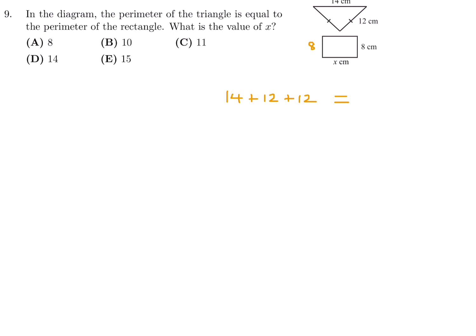And that perimeter is the same as the perimeter of this rectangle. So if that's 8, that's 8. And if that's X, this is X. So it's going to be X plus X, which is 2X, plus 8 plus 8, which is 16. So on this side, we have 38. And on this side, we have 16 plus 2X. If I do the math here, 38 minus 16 is 22. 22 is equal to 2X. Therefore, X is equal to 11. Number 9, the answer is C.